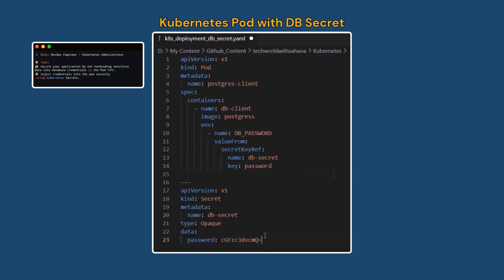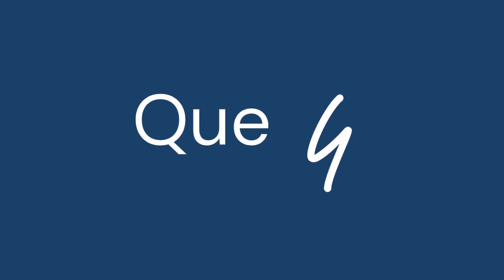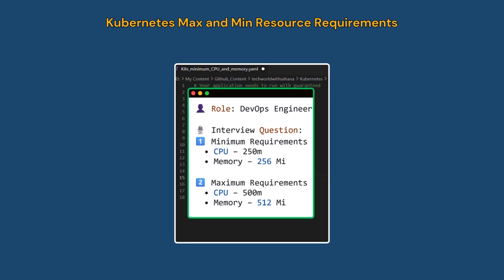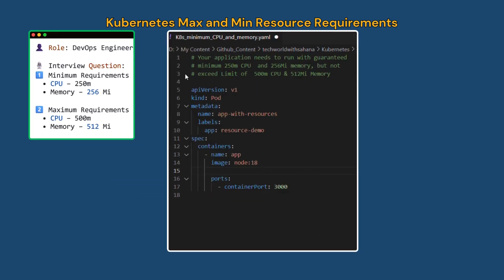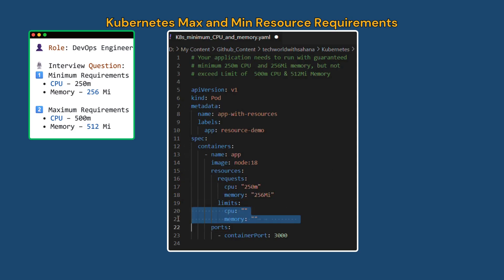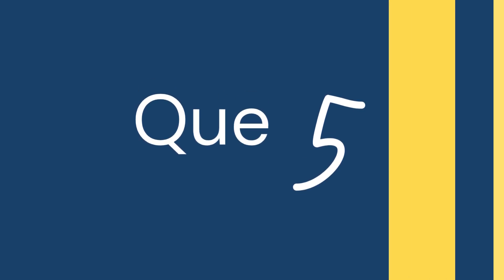Your application needs to run with a guaranteed minimum CPU and memory of 250m and 256Mi, but should not exceed certain limits of 500m and 512Mi. As a DevOps engineer, inside the container block of your pod YAML, define the 'resources' section. It has two main parts: 'requests' — the minimum guaranteed CPU and memory — and 'limits' — the maximum that is allowed. Put the minimum values under 'requests' and the maximum values under 'limits'.